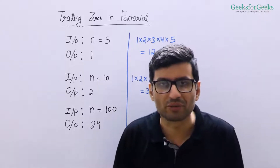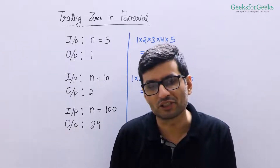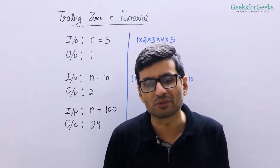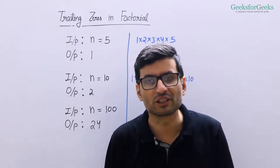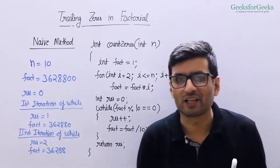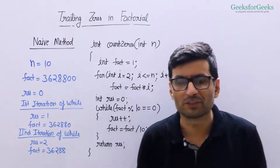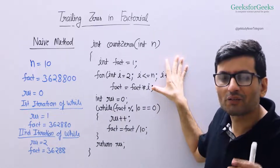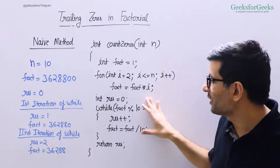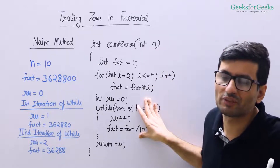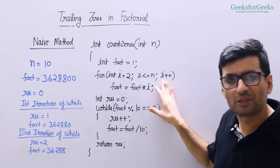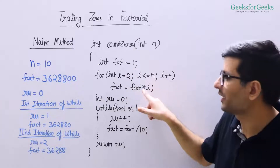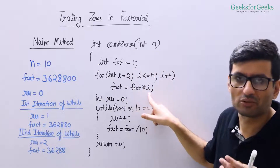Please pause this video and try to write a function that takes an integer n as an argument and returns another integer which is the count of trailing zeros in the factorial of n. Let us first talk about a naive solution. The idea is simple: we first compute the factorial of the given number. We initialize factorial as 1 then run a loop from 2 to n, multiplying factorial by i inside the loop.